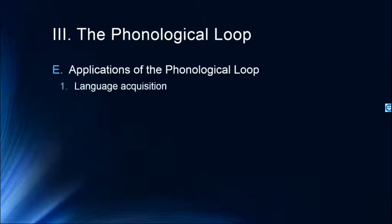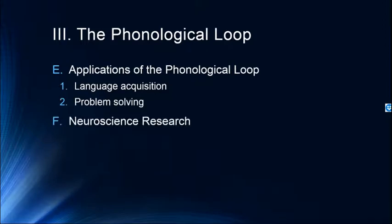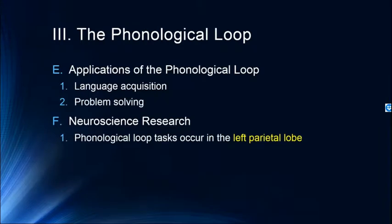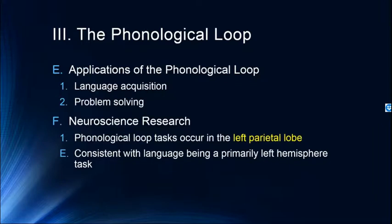Applications of the phonological loop include language acquisition — the phonological loop is particularly useful when learning any language — and problem solving, as talking your way through a problem is how many people solve it. Neuroscience research has shown that phonological loop tasks tend to occur in the left parietal lobe, which makes perfect sense as this is consistent with language being a primarily left hemisphere task. As someone repeats words to themselves, this is happening generally in the left hemisphere, particularly the left parietal lobe. That brings us to the end of our discussion of the phonological loop; in our next lecture we'll be talking about the Visual-Spatial Sketchpad.